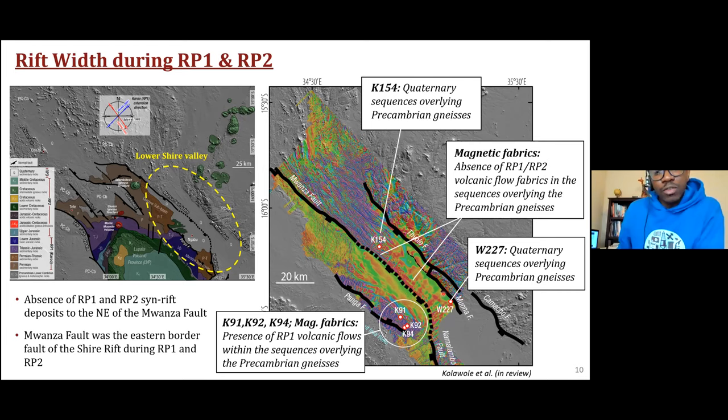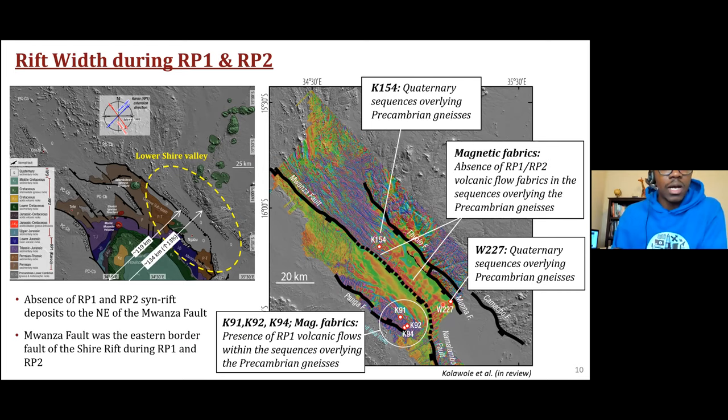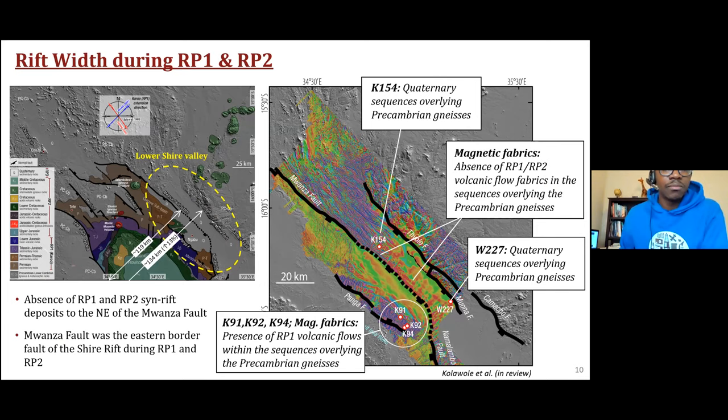Therefore, we interpret that the Mwanza fault was actually the eastern border fault of this basin during RP1 and RP2. The basin was approximately 119 kilometers wide during RP1 and RP2, but in RP3 it has widened to the northeast by about 13 percent. The Tiolo fault represents a new Quaternary, or RP3, eastern border fault of the basin. There has been no recorded rifting activity to the southwest of the basin, which is why we interpret the widening to be to the northeast.